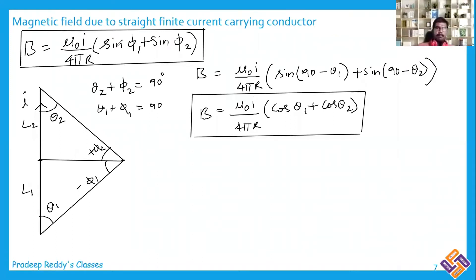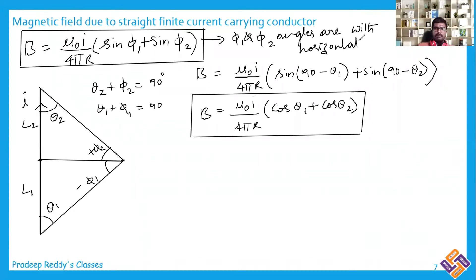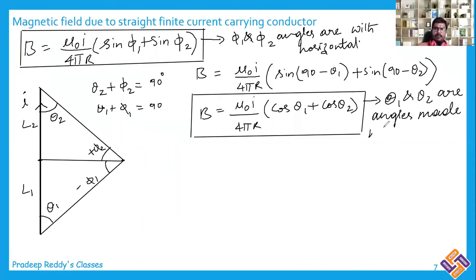When the angles are given with respect to the wire, you should use cosθ₁ and cosθ₂. When angles are given with respect to the horizontal (perpendicular), use sinφ₁ and sinφ₂. If angles are given with respect to the wire and you use sinφ instead, you will get the wrong answer. Choose the appropriate formula based on how the angles are defined in the problem.